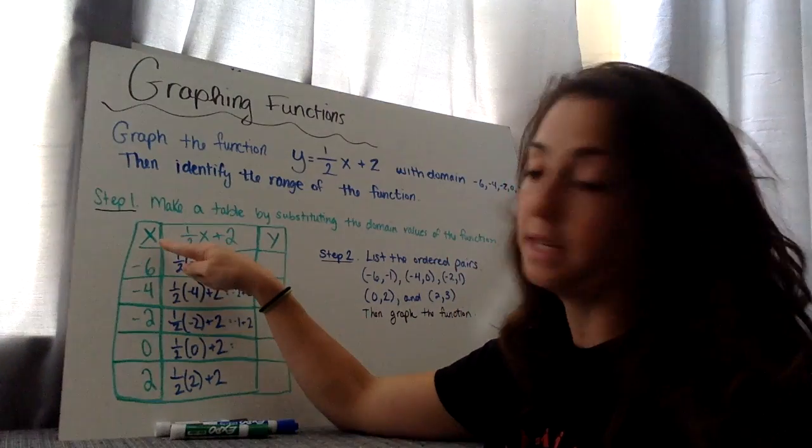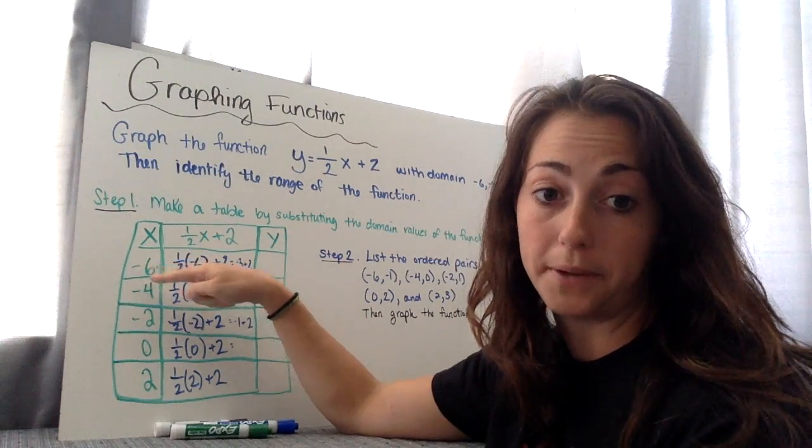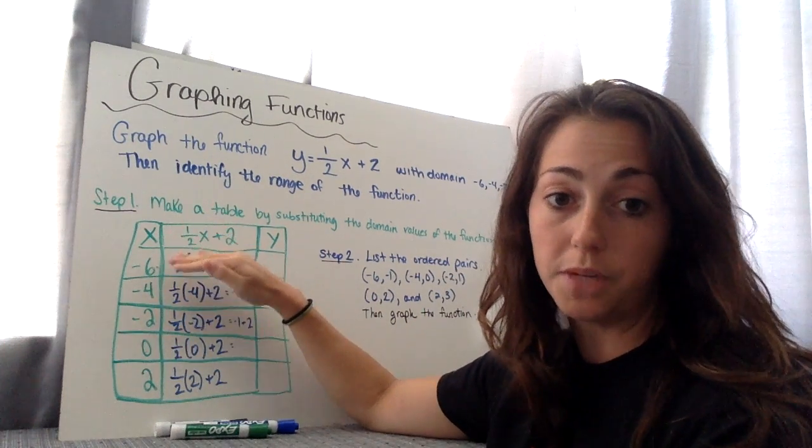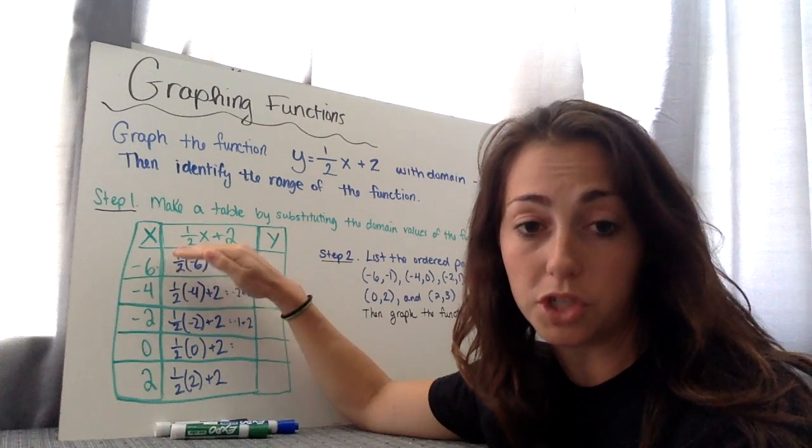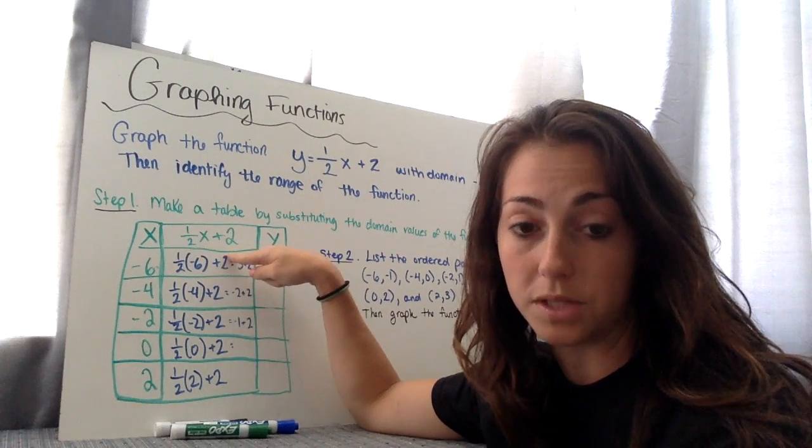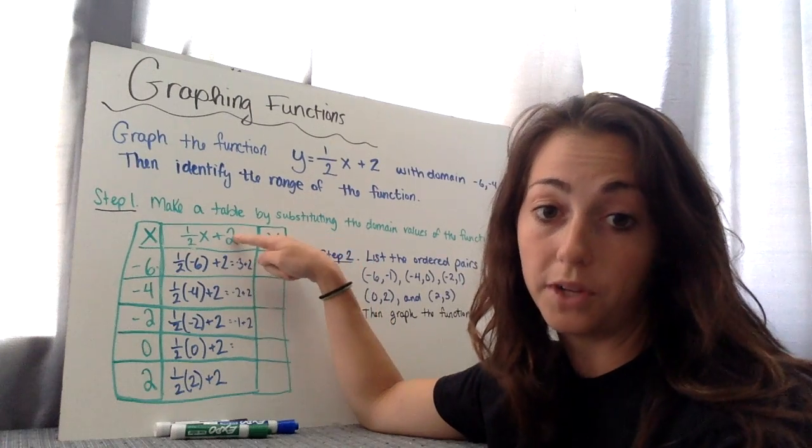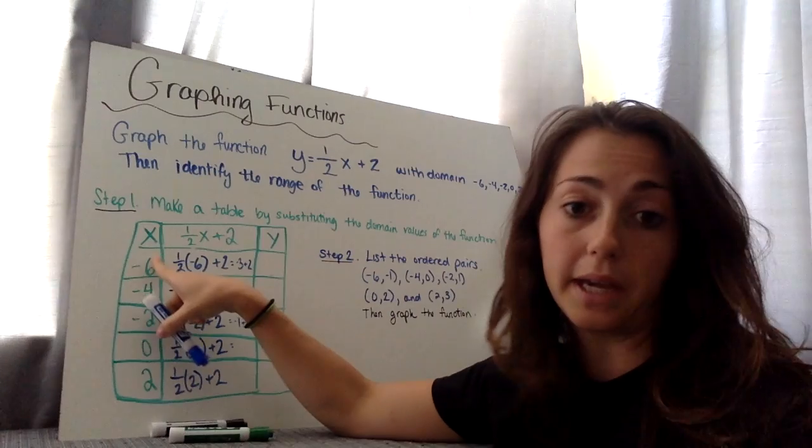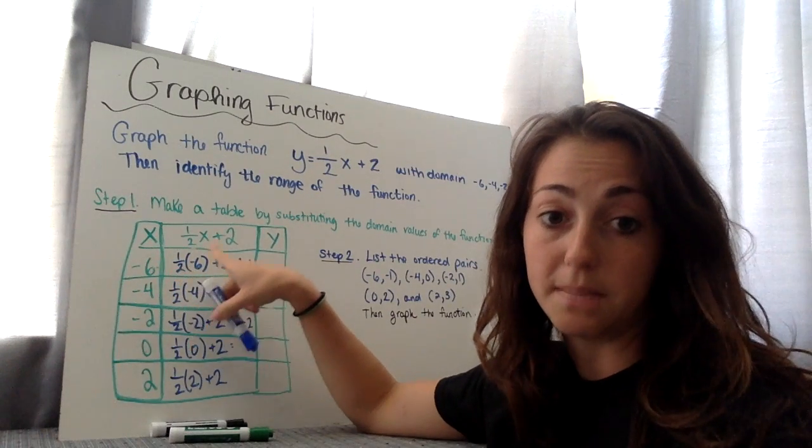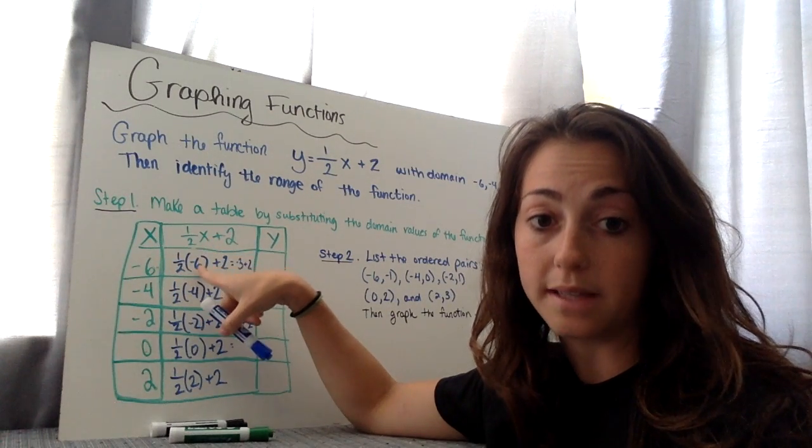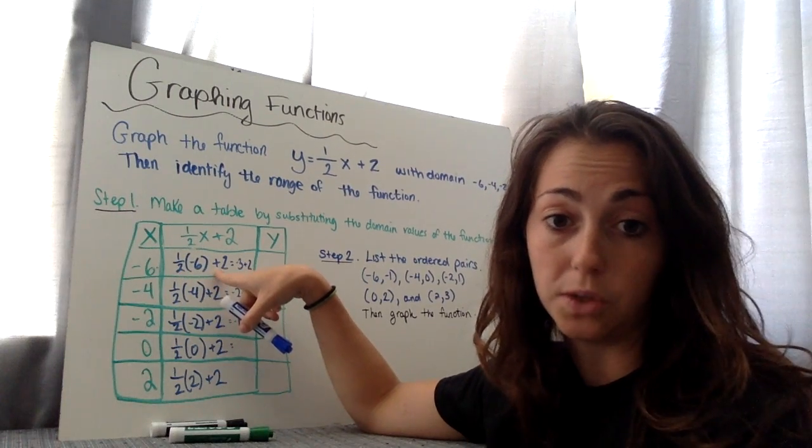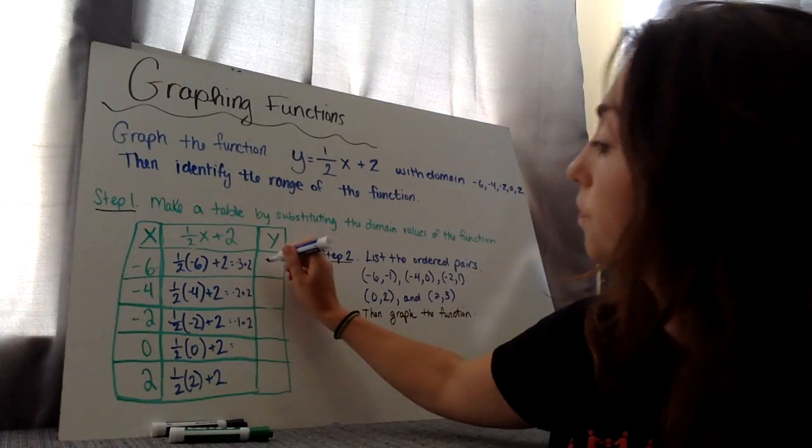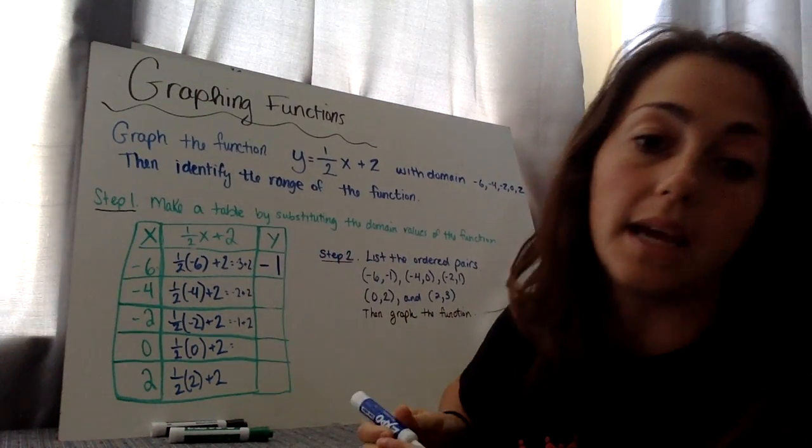So I have here my domain is x, and the domain I'm going to put in is negative 6, negative 4, negative 2, 0, and 2. What's the function? Well, the input value of the function is half of x plus 2. And whatever you get is your y. So the first domain value I'm plugging in is negative 6, and that's my x value. So I'm plugging in for x, negative 6, half of negative 6 plus 2, half of negative 6 is negative 3, and negative 3 plus 2 is negative 1.